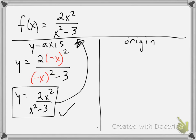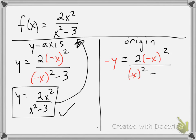For origin symmetry, we are going to negate both y and x. So I have negative y equals 2 times negative x squared, all divided by negative x squared minus 3. I'm going to address the negative x's first — since I'm squaring them, the negatives go away, absorbed by the square.